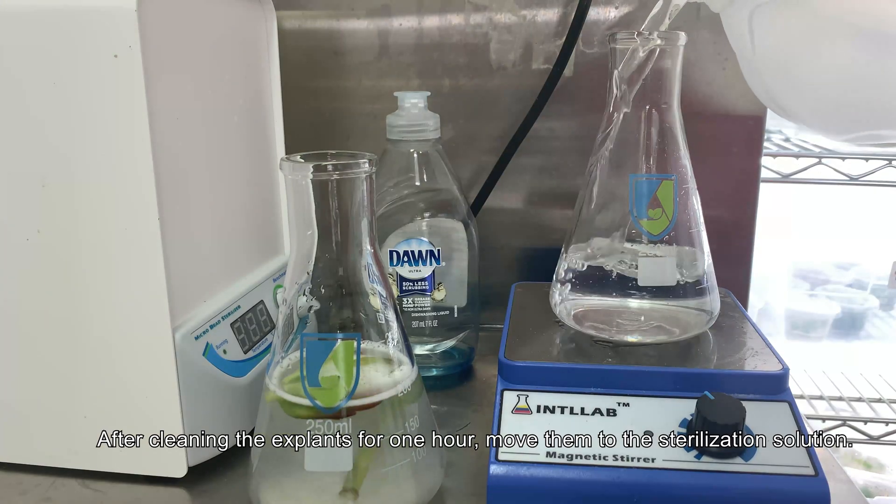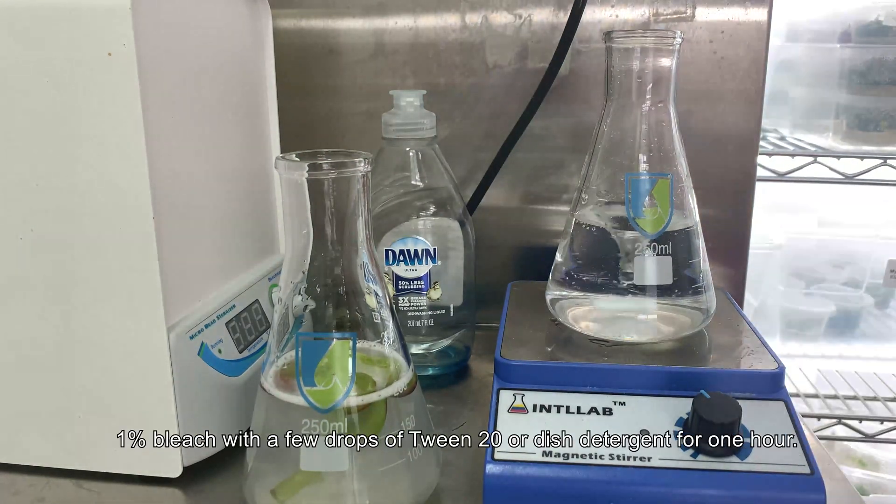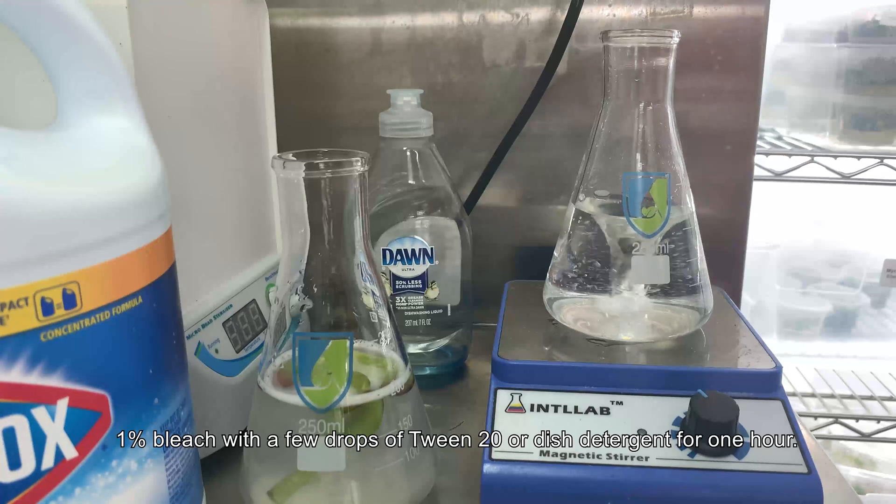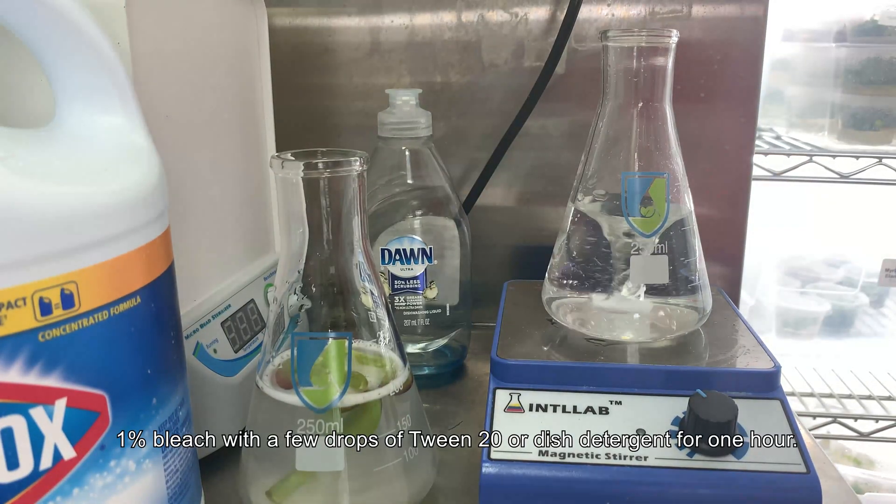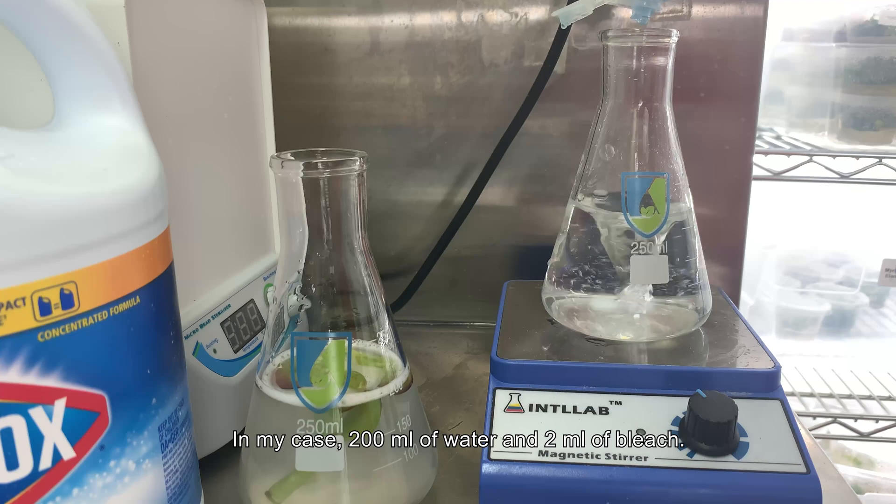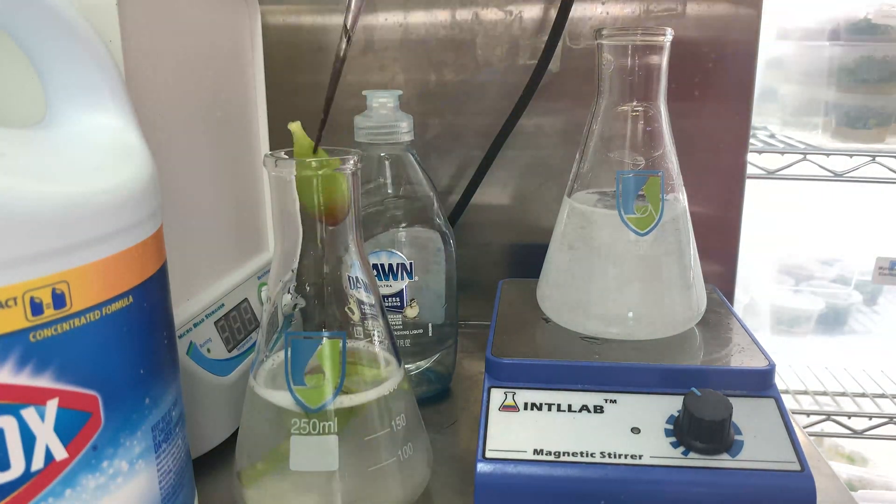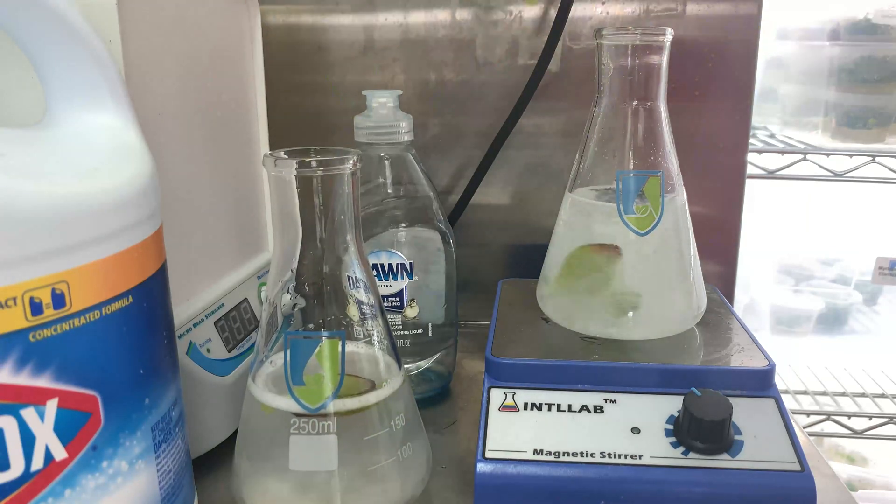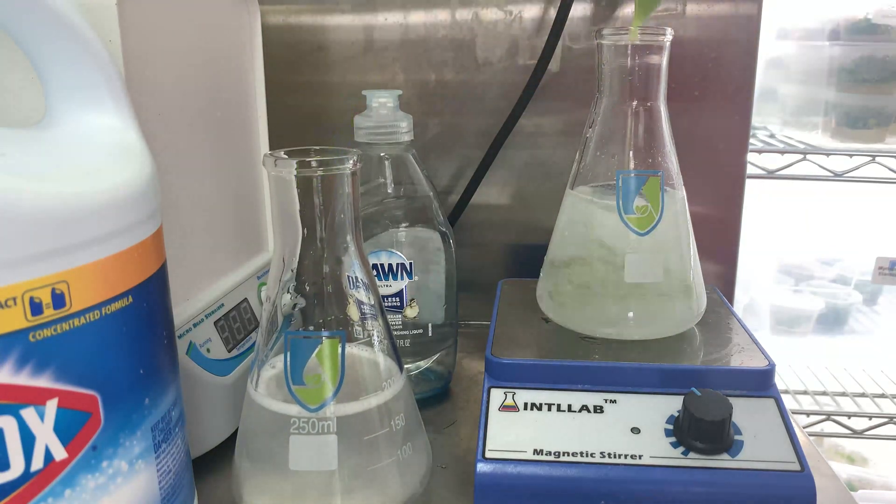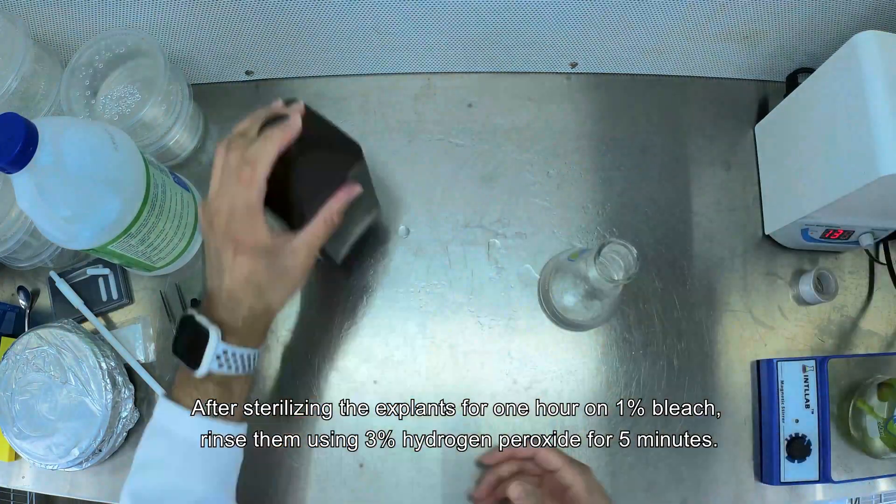After cleaning the explant for one hour, move them to the sterilization solution: 1% bleach with a few drops of Tween 20 or this detergent for one hour. In my case, 200 ml of water and 2 ml of bleach.